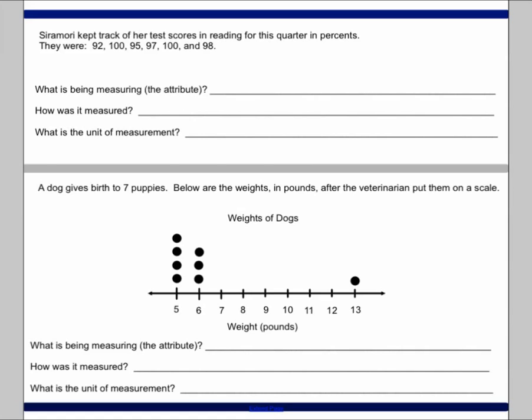And the three questions are: what is being measured? And we call this thing that we are measuring the attribute. An attribute is a characteristic or a trait of something. So what are we measuring?